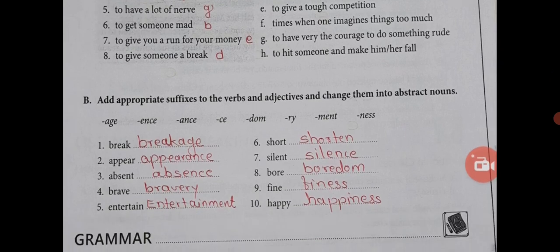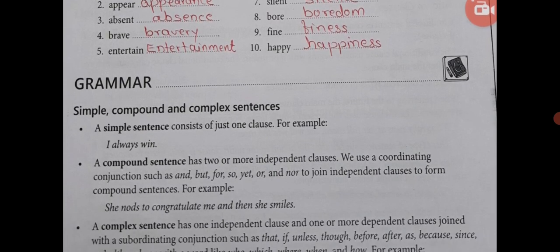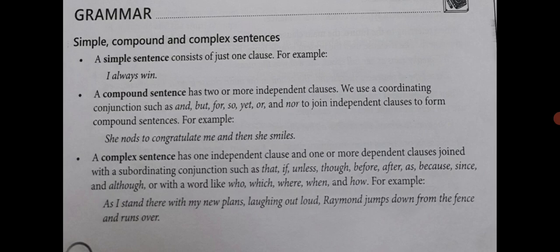Add appropriate suffixes to the verbs and adjectives to change them into abstract nouns. To give you a simple sentence and to give you a proof of interval. Raymond jumps down from the fence and runs over.